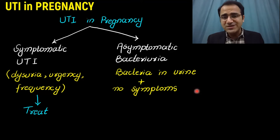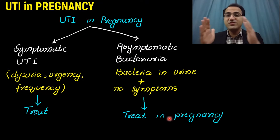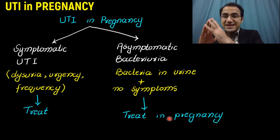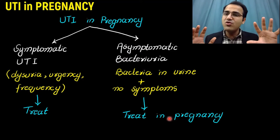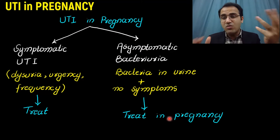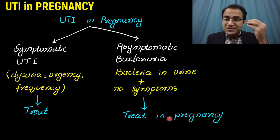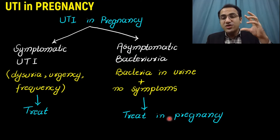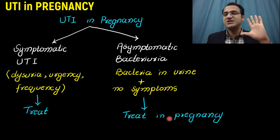Bacteria in urine with no symptoms is asymptomatic bacteriuria, and it must be treated in pregnancy. If the patient is not pregnant, it does not need to be treated. But if the patient is pregnant, this asymptomatic bacteriuria can progress to pyelonephritis as a full-blown UTI, which can lead to complications to the fetus including premature delivery. These complications are prevented by screening and treating patients.